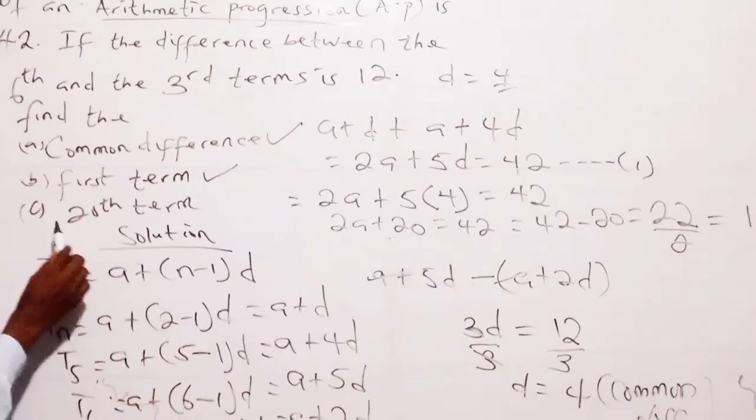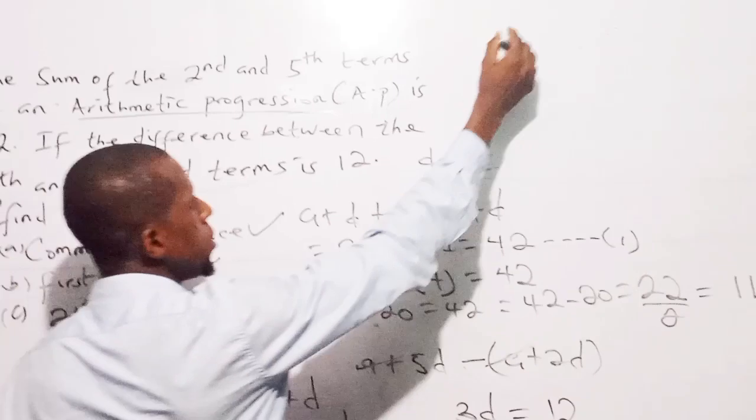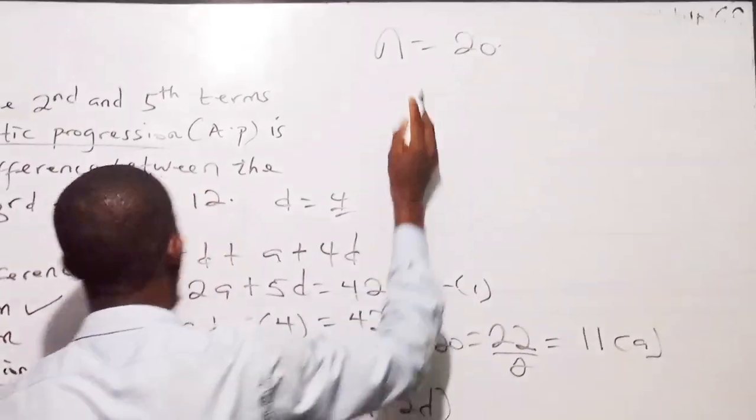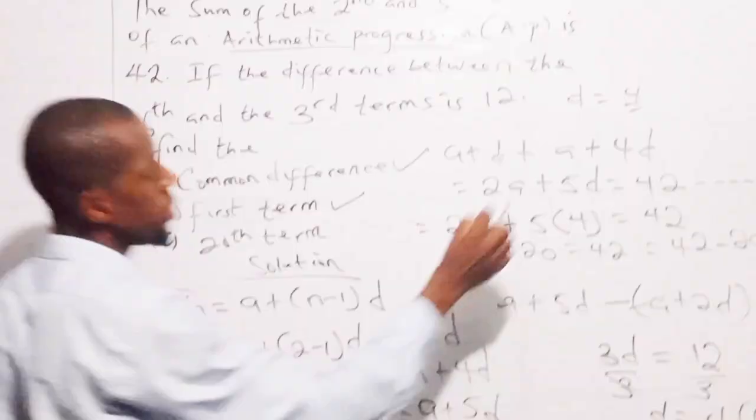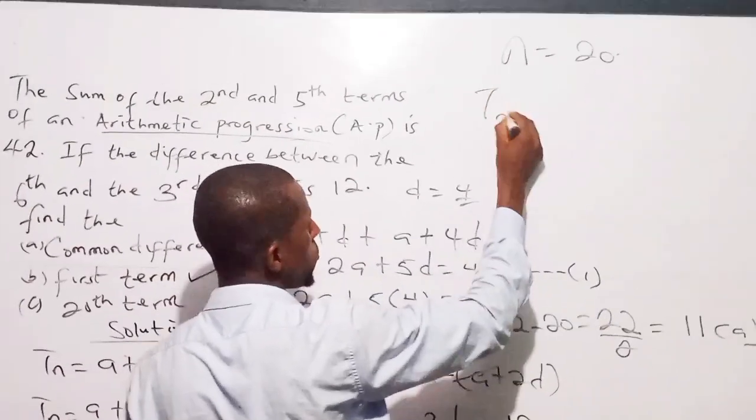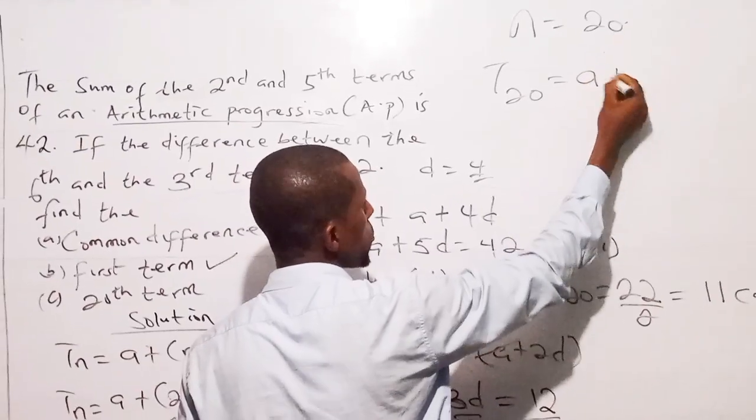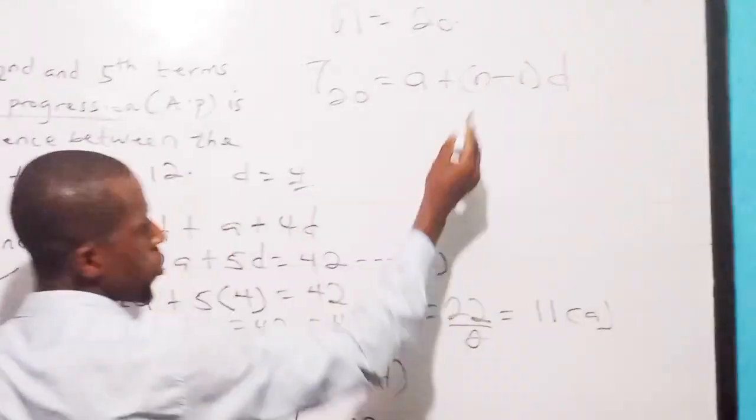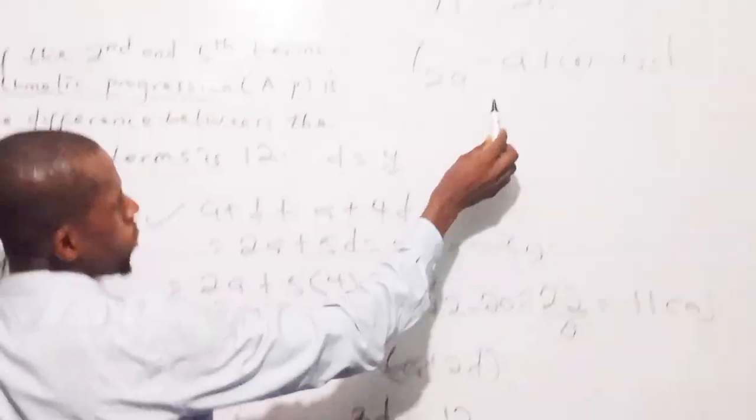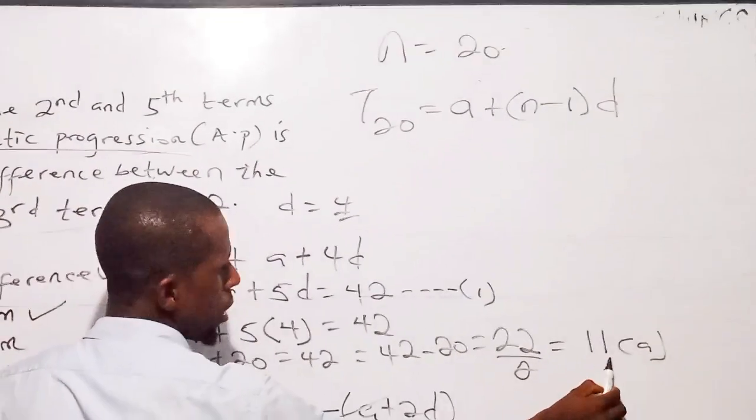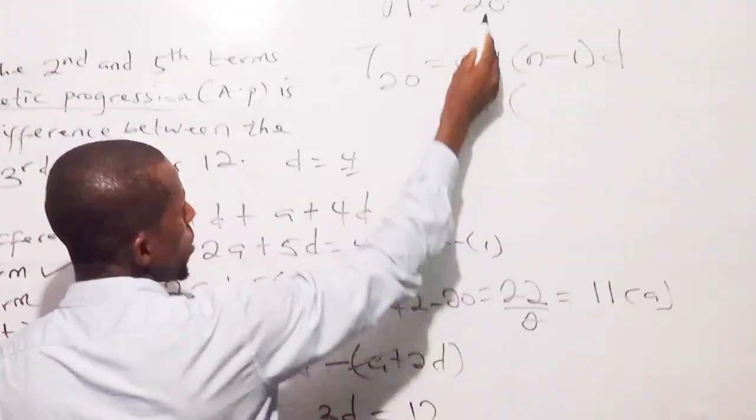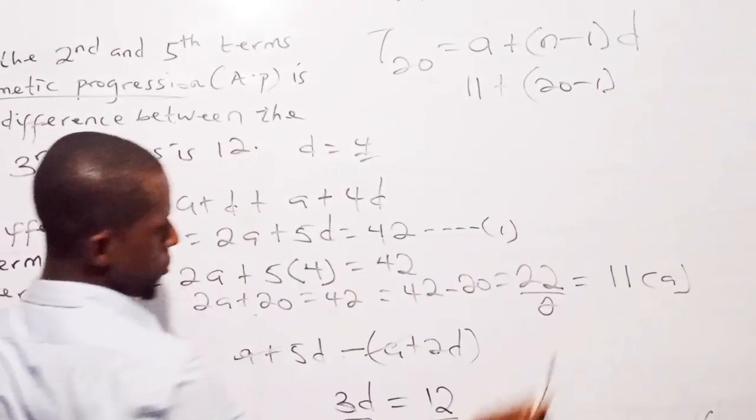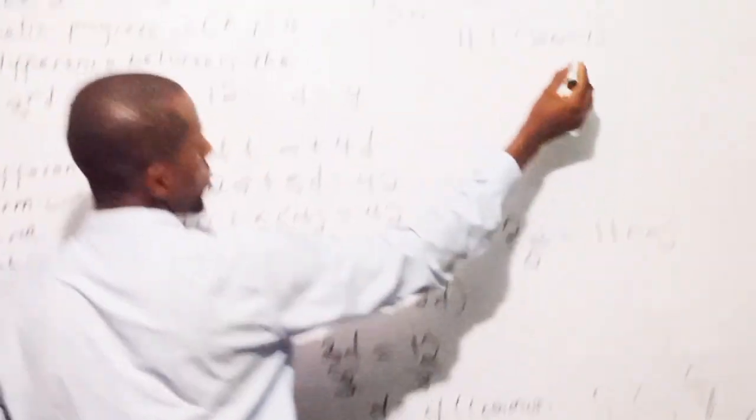So the last one here says we should look for the 28th term, meaning when N is 28. So using this expression, this formula here that says to look for the Nth term of an arithmetic progression, we say the first term plus the number of terms, subtract 1 from this, multiplied by the common difference. So we have figured out our first term to be 11. So we have 11 plus, we are working with 28. So we have 28 minus 1. The common difference is 4 times 4.